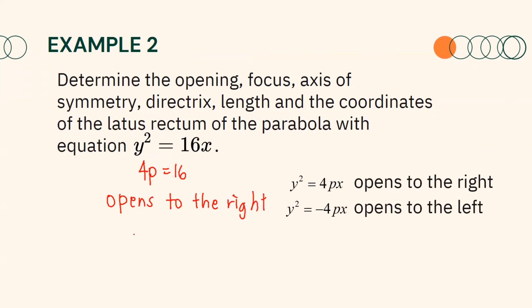Since 4p equals 16, the length of the latus rectum is equal to 16 units. Moreover, since 4p equals 16, it follows that p equals 4. Therefore, the focus and the directrix are 4 units away from the vertex.